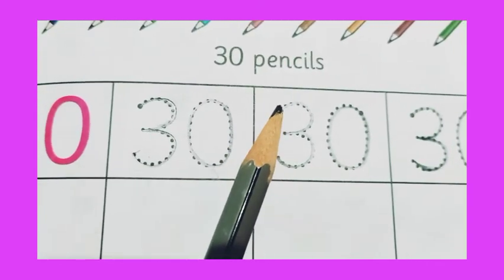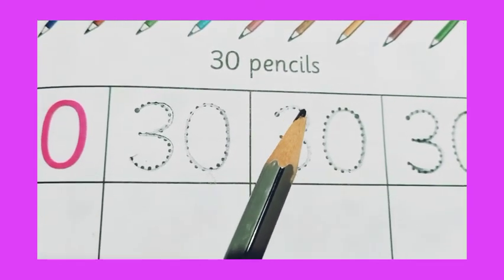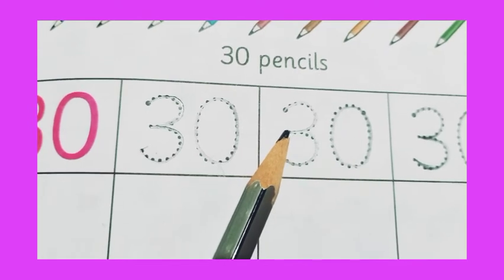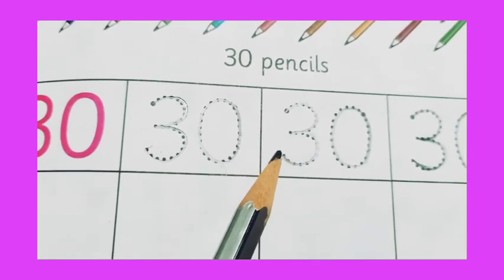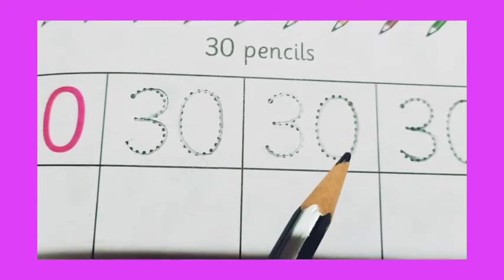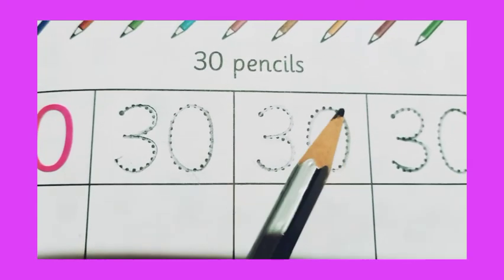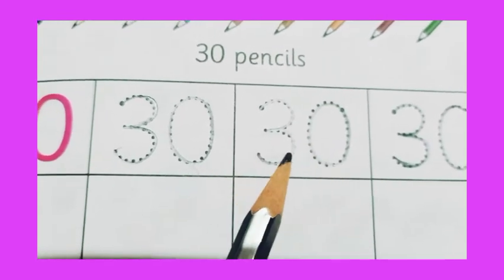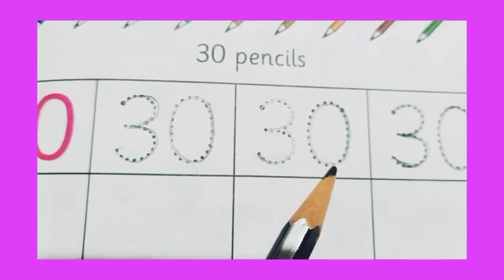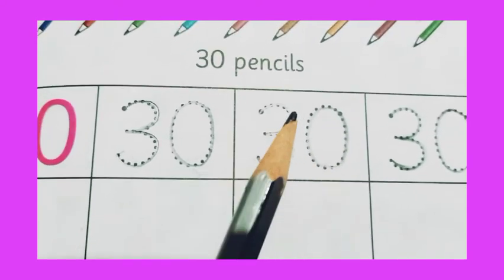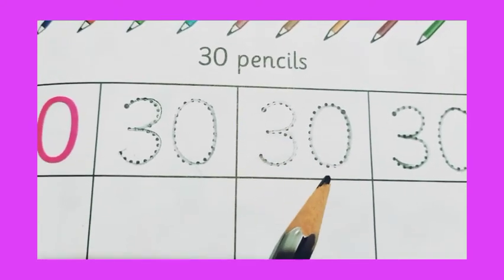Again we write. First of all, we draw a curve and a semicircle, join another curve and a semicircle. This becomes 3. Then we draw a circle. So what becomes 0. 3, 0, 30.